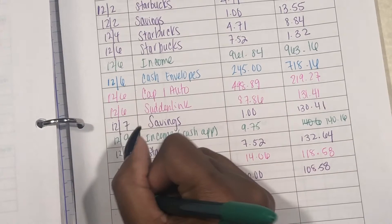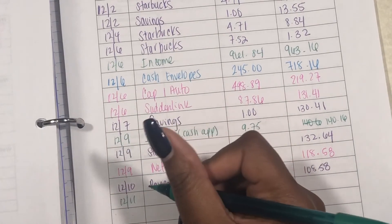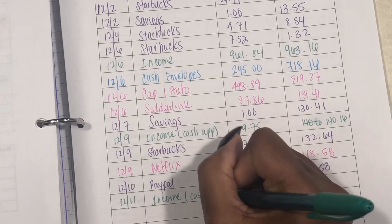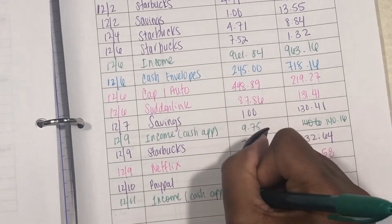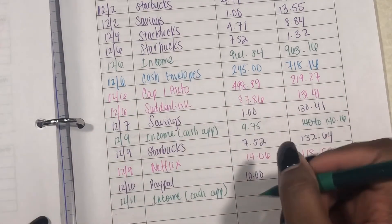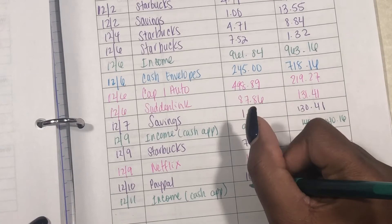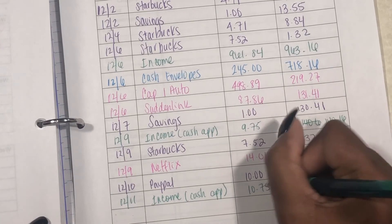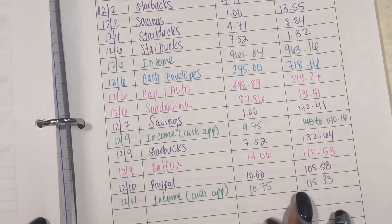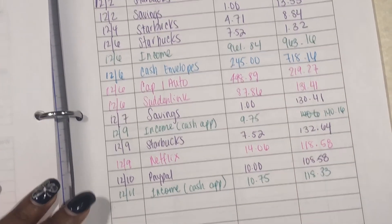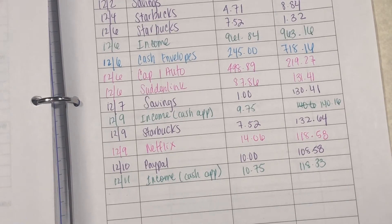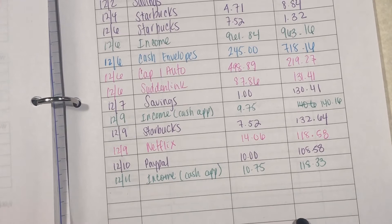On the 11th I had another income from Cash App — I had paid for something on my credit card, which was already paid off, and I was getting the money back. Every time money comes into my Cash App I never remember to transfer it back into my account, so that's why we're seeing all of this now.